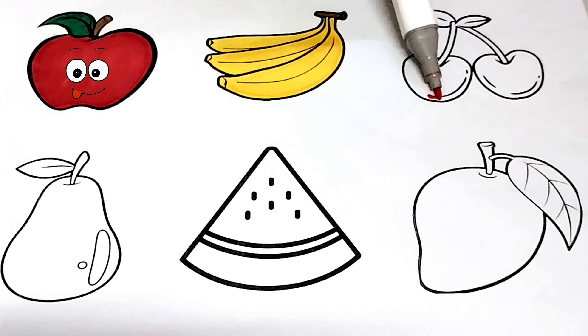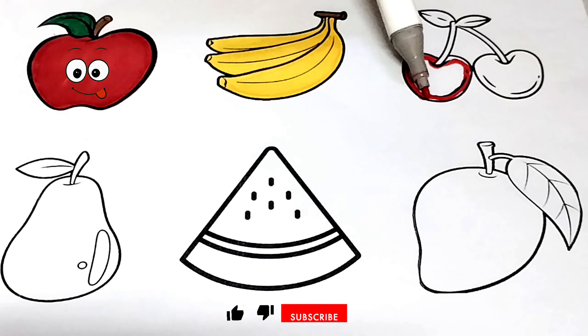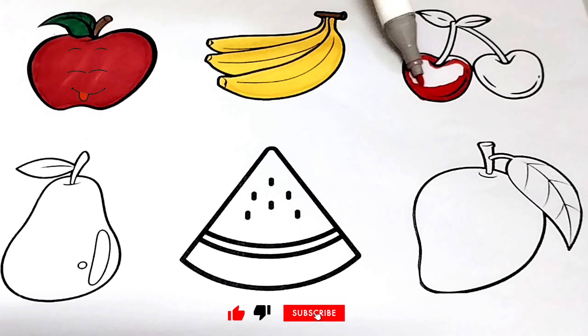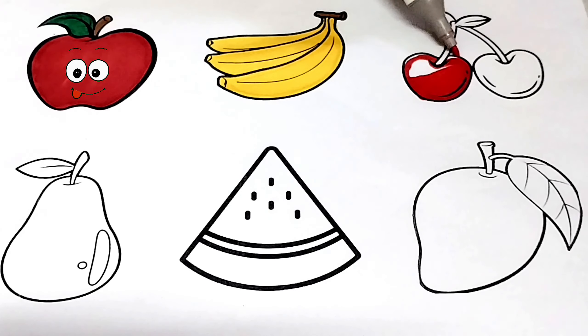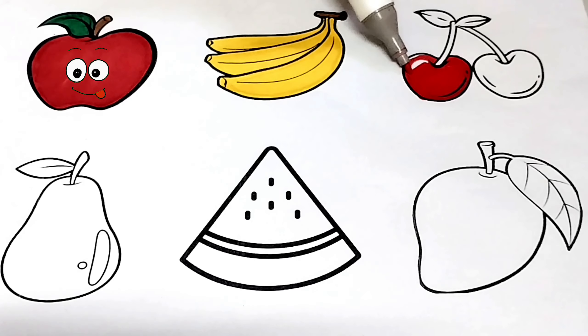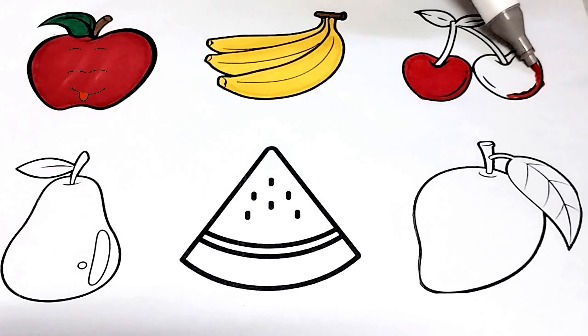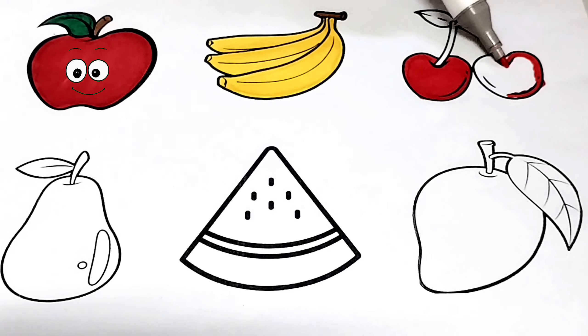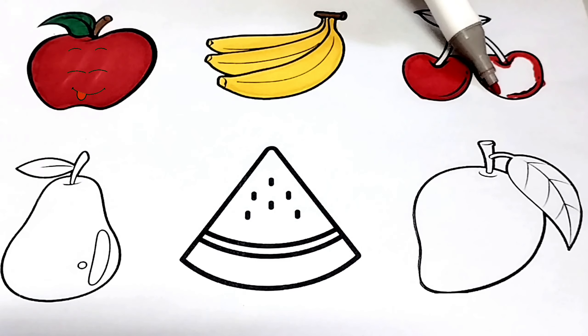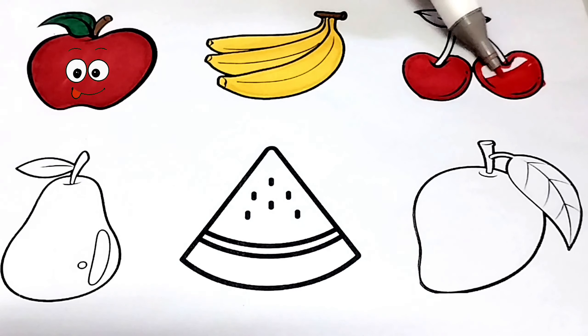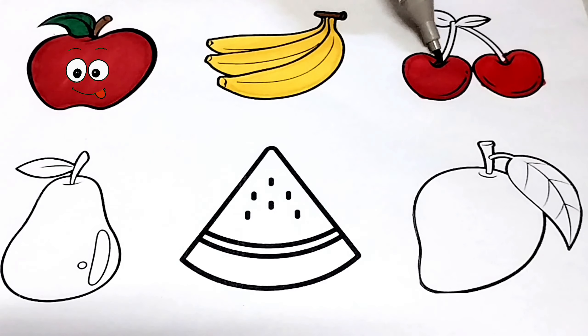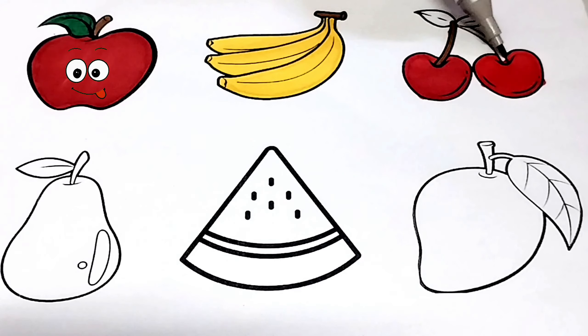I am coloring brown color in cherries. I am coloring red color in cherries. Now I am coloring in second cherry. I am coloring brown color in the stock of the cherries. I am coloring green color.